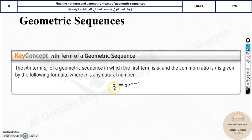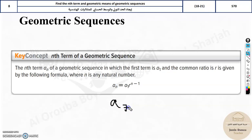The nth term of a geometric sequence is given by the first term multiplied by r, which is the common ratio, to the power n minus 1. So if you want to find the seventh term, you need to know the first term a1, and then r to the power 7 minus 1, that is to the power 6.